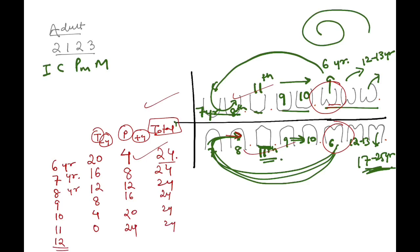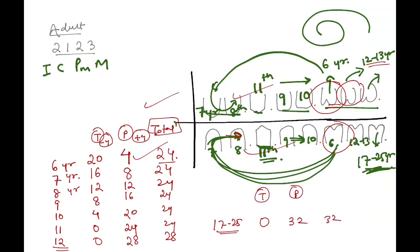Continuing the pattern: at twelve years, temporary teeth reach zero, but the second molars erupt at twelve to thirteen years, making the permanent count twenty-eight. Finally, when the third molars erupt at seventeen to twenty-five years, the permanent teeth become thirty-two, giving us the full adult dentition of thirty-two teeth.